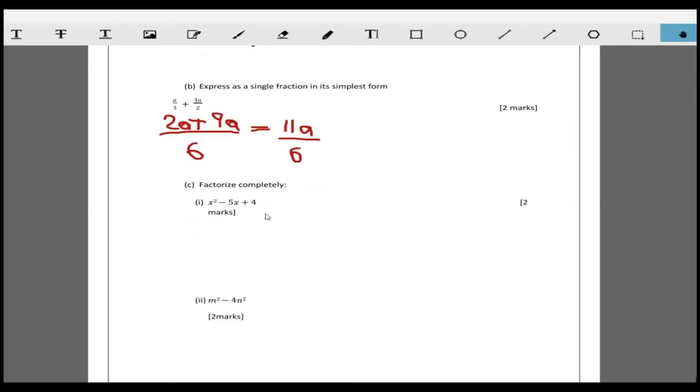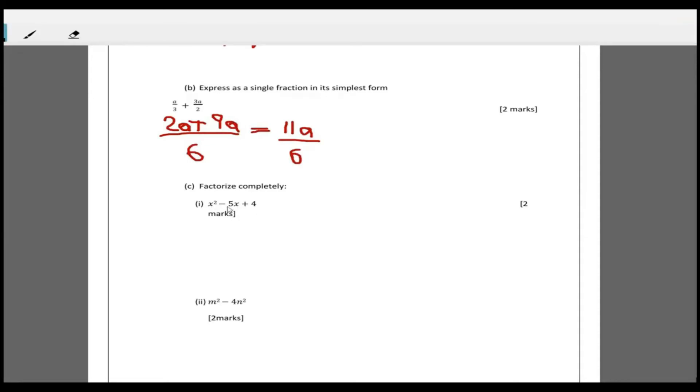Now part C says factorize completely x squared minus five x plus four. So we're going to ask ourselves which two numbers when we times them we'll get four, but when we add them we get negative five - that's negative one and negative four. So we're going to rewrite this as x squared minus x minus 4x plus four. This is how we split the middle term. From the first two we can factor out x and we're left with x minus 1. And then from the next two we can factor out a negative 4, and we're left with x minus 1. So we can finally conclude that the quadratic when it's factorized is x minus 1 times x minus 4.